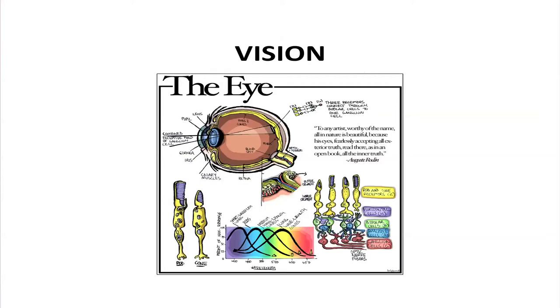Let us come to the first sense — vision. The most developed and most frequently used sense organ in human beings is vision. More of the brain is devoted to mechanisms for vision than to any other sense. Vision dominates over information received from other senses — for example, what we see has more importance than what we hear. In our day-to-day transactions with the external world, we make use of vision much more than all the senses combined, about 90% of the time.